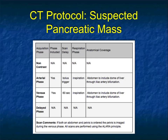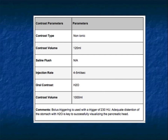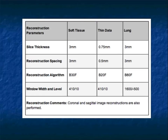You also need documented protocols — when JCAHO used to visit pre-COVID, they would ask for a book next to your scanner with all the protocols printed. Take the pancreas as an example: we use arterial and venous phases. We specify when each phase is acquired, the distance scanned, KVP and MAS, collimation, contrast parameters — what kind of contrast, volume, injection rate, oral contrast type and amount — and reconstruction details including thick and thin slices, reconstruction algorithm, and window width and window centers.